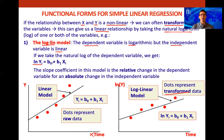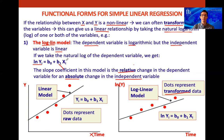In the log-lin model, the slope coefficient b1 represents the relative change in the dependent variable for an absolute change in the independent variable. When we have a natural log in front of a variable, that means it's a relative change. Since the independent variable here appears in its normal form without a log, it represents an absolute change. Once transformed, we can now use linear regression on this data.